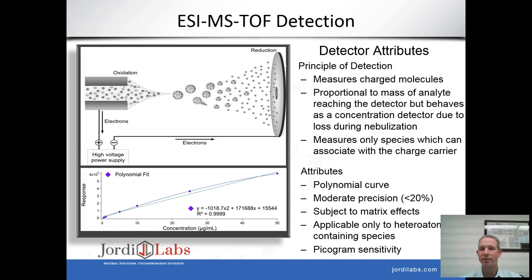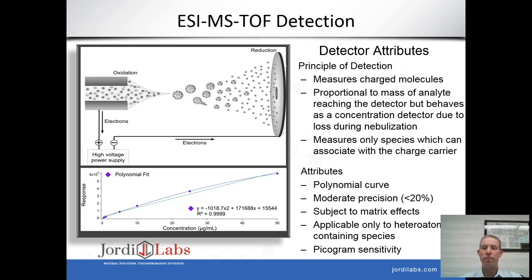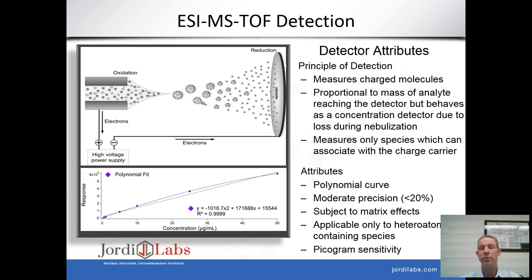The ESI-MS detector measures charged molecules via electrospray ionization. The response is proportional to analyte mass reaching the detector, but the detector behaves as a concentration detector due to analyte loss during nebulization. It measures only species which can be associated with a charge carrier — if a molecule has no heteroatoms, we typically get no signal. It is a nonlinear detector giving a polynomial curve, so response factor variation is a concern as a function of concentration. Precision is moderate at less than 20%, and it is subject to significant sample matrix effects due to competition for ionization. It is applicable only to heteroatom-containing species, but its major advantages are picogram sensitivity and the ability to identify compounds through observed mass.